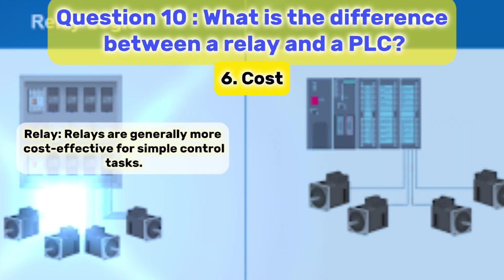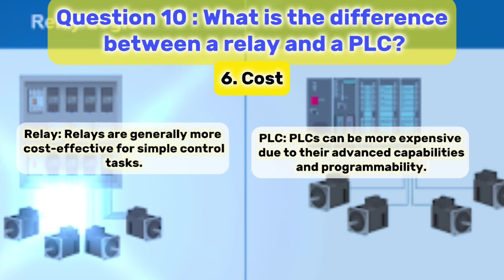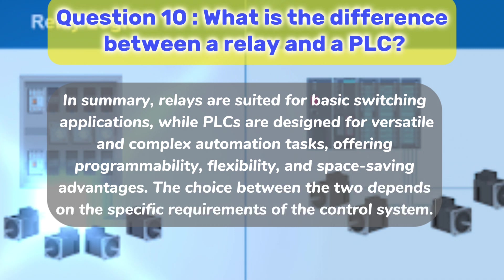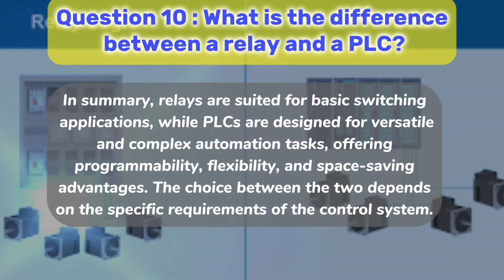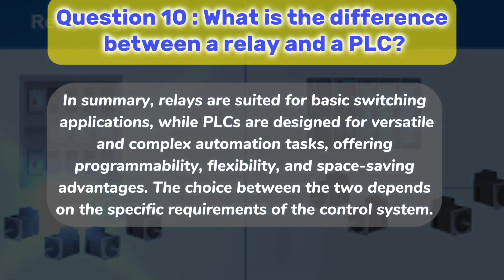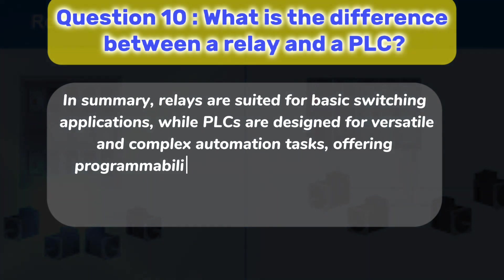6. Cost. Relay: Relays are generally more cost-effective for simple control tasks. PLC: PLCs can be more expensive due to their advanced capabilities and programmability. In summary, relays are suited for basic switching applications, while PLCs are designed for versatile and complex automation tasks, offering programmability, flexibility, and space-saving advantages. The choice between the two depends on the specific requirements of the control system.